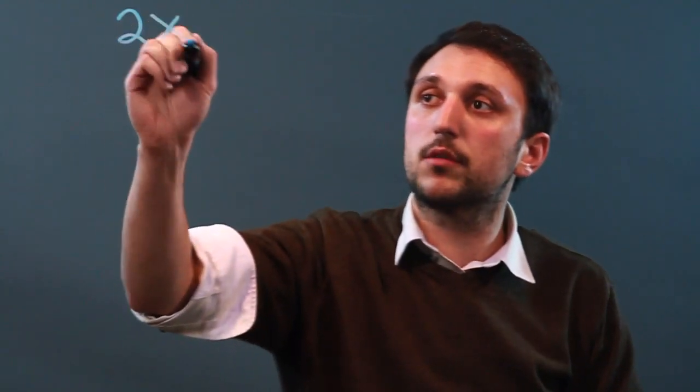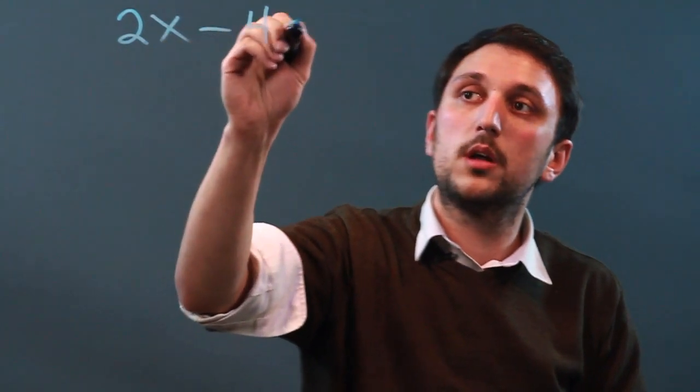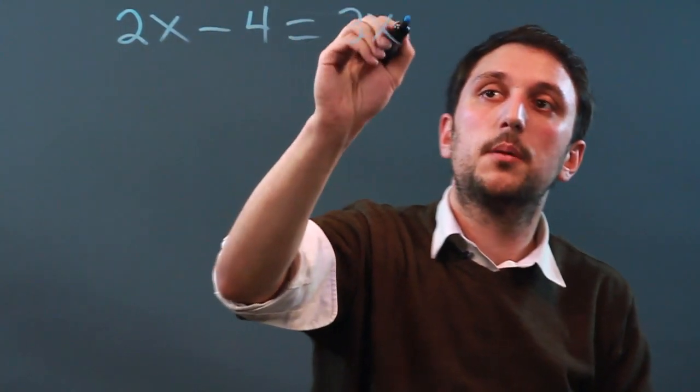So first let's start with an equation: 2x minus 4 equals 3x plus 7.